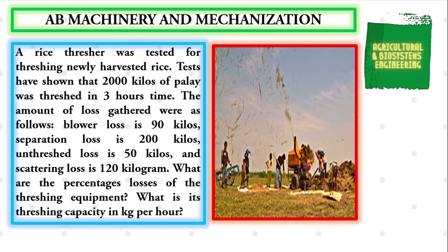What are the percentage losses of the threshing equipment? What is its threshing capacity in kilograms per hour?